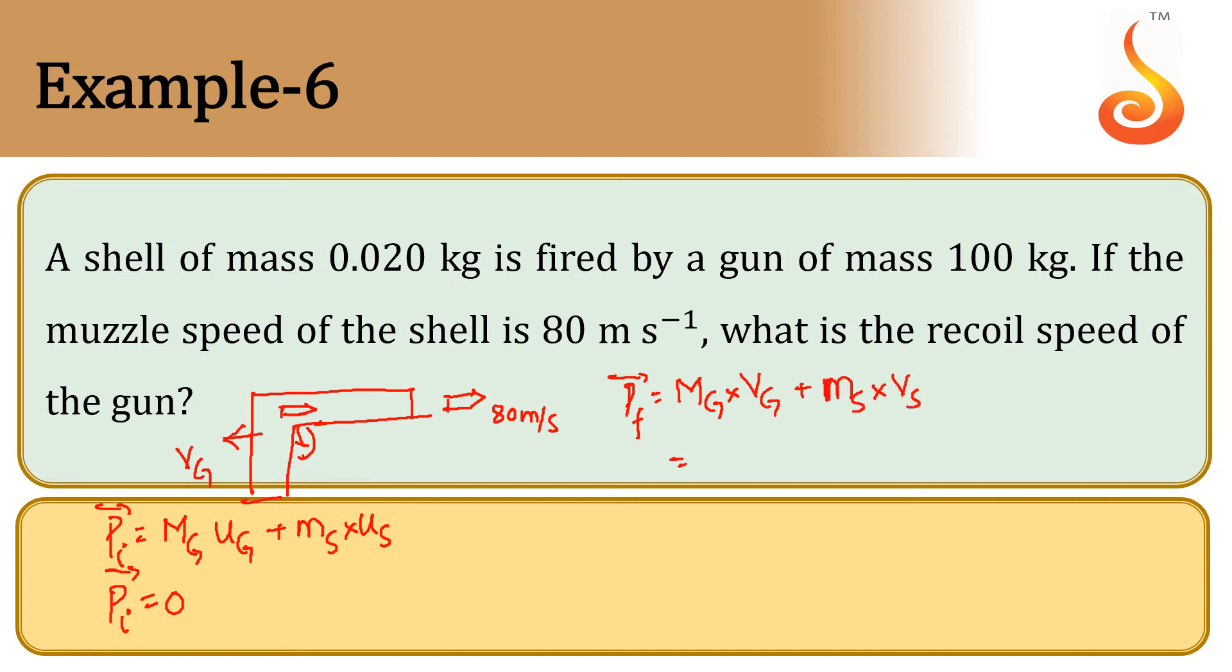Mass of the gun is 100 kg and velocity of the gun we need to calculate, plus mass of the shell is 0.02 kg times velocity of the shell is 80 meters per second equals the final momentum.